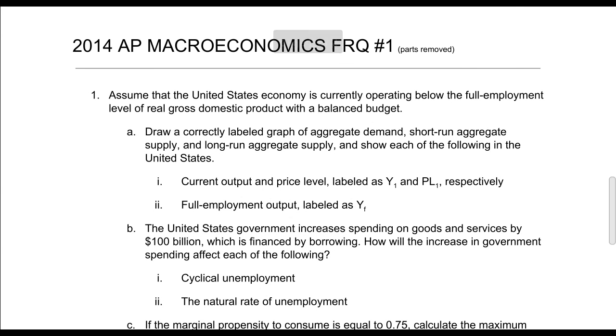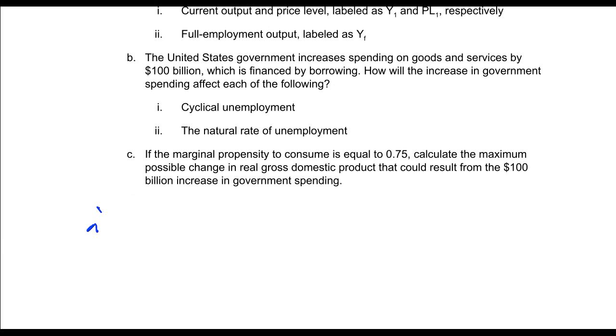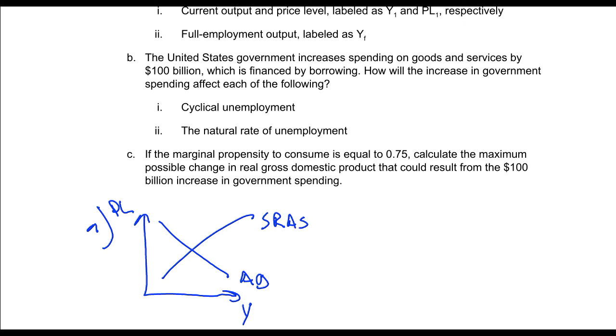Let's go to the 2014 question. It's actually very similar. Assume the United States is operating again below the full employment level. Notice this is exactly the same as that other question. The probability of you getting a question like this where you might have to draw that graph is pretty high. So I would do the same thing. Equilibrium price level, GDP or income. Draw on my aggregate demand, short-run aggregate supply, equilibrium price level, equilibrium output. And because we are below full employment, this is my full employment at my long-run aggregate supply.